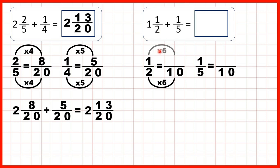2 times 5 is 10, 1 times 5 is 5, 5 times 2 is 10, and 1 times 2 is 2. So instead of 1 and a half we can write 1 and 5 tenths because that's equivalent, and instead of adding 1 fifth we can add 2 tenths.